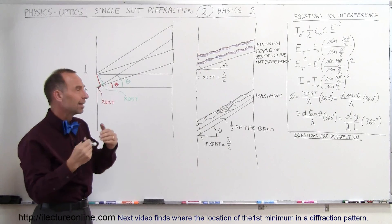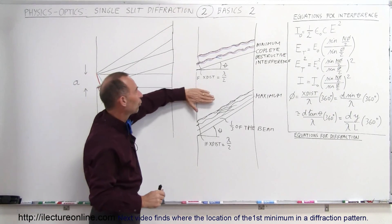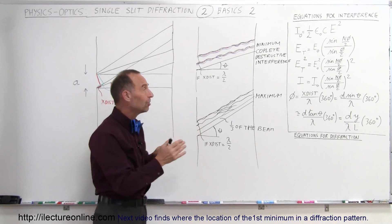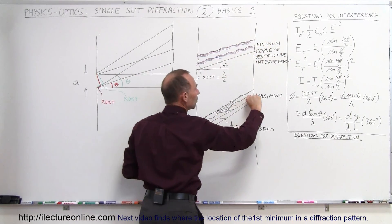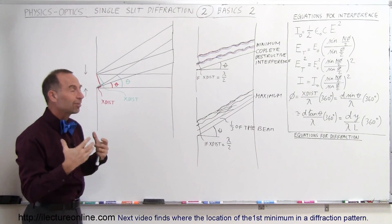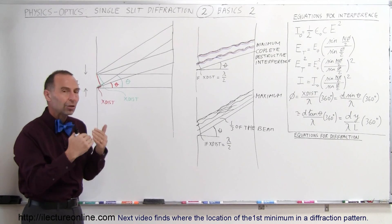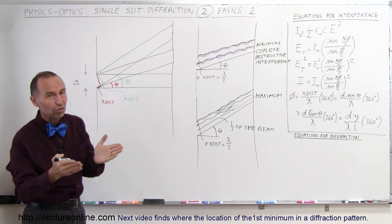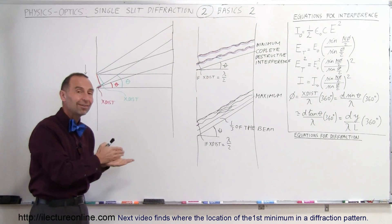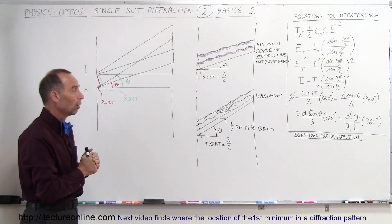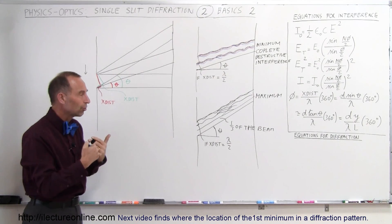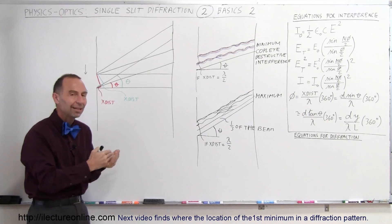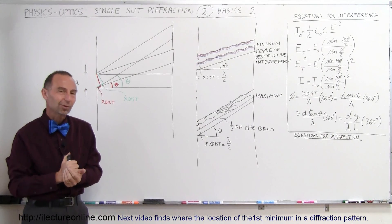The whole concept of understanding diffraction patterns with a single slit is to realize that as you go further up the screen with a greater lookup angle, different portions of the beam cancel each other out. When all of the beam cancels out you have a minimum; when a portion makes it through you get a maximum. In upcoming videos we'll calculate when you get a minimum or maximum, the angles associated with them, and the intensity at different portions of the diffraction pattern.